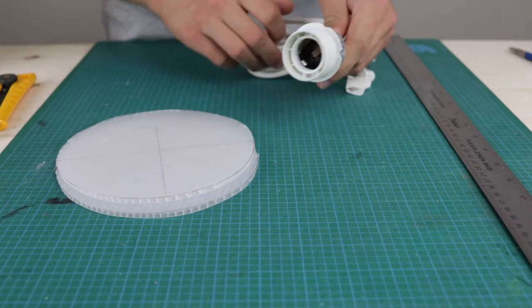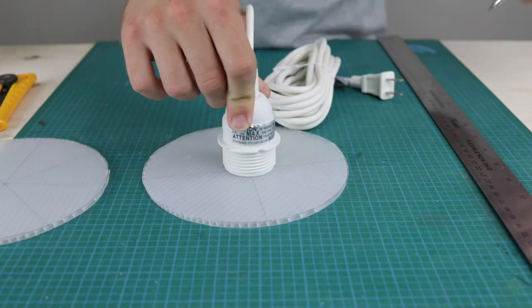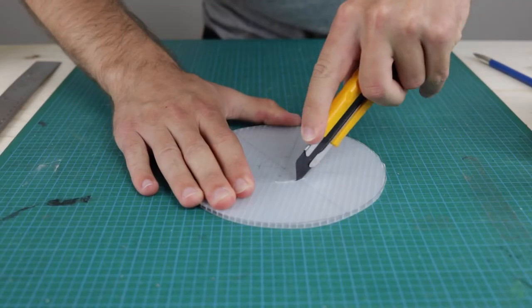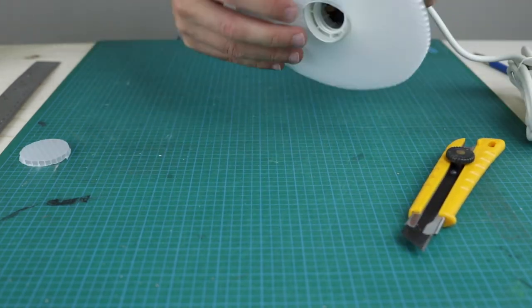Next up I took one of the circular pieces and traced a hole for the socket set in the center of it. When cutting this hole try to keep it as true to the line as possible so it's a really snug fit.